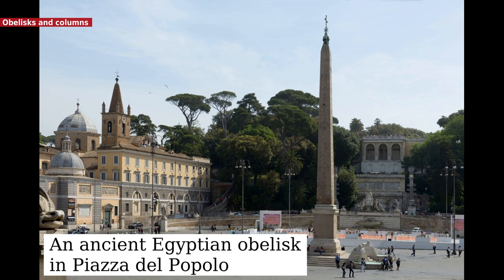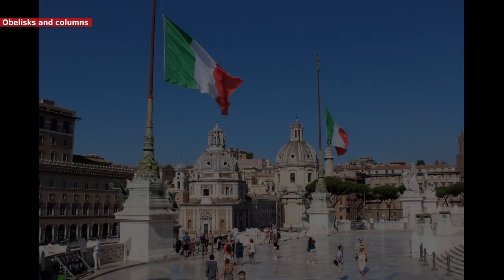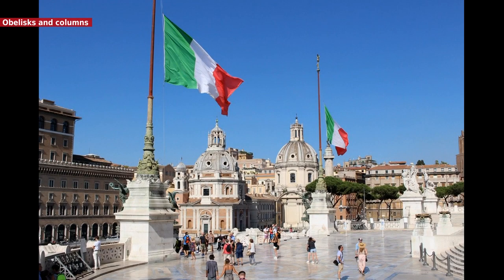The city hosts eight ancient Egyptian and five ancient Roman obelisks, together with a number of more modern obelisks; there was also formerly an ancient Ethiopian obelisk in Rome. The city contains obelisks in piazzas, such as in Piazza Navona, St. Peter's Square, Piazza di Monte Citorio, and Piazza del Popolo, and others in villas, thermal parks and gardens, such as in Villa Celimontana, the Baths of Diocletian, and the Pincian Hill.